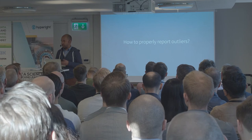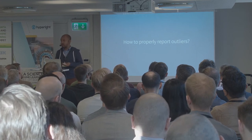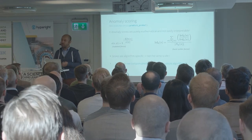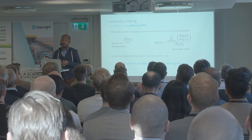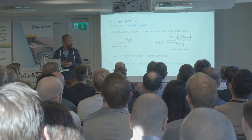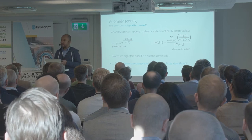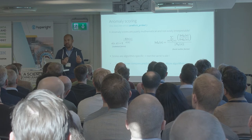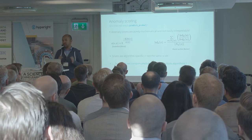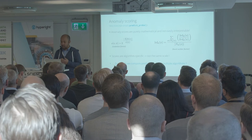Now let's switch to the part where we actually want to report outliers. It's fine to have algorithms that score data points, but how do you report that to your colleagues or to the business? In a supervised classification you get a probability of belonging to a certain class. In the unsupervised case you get complicated anomaly scores, which are hard to interpret. And when comparing several algorithms, the anomaly scores are defined differently across algorithms, so it doesn't make sense to compare them directly.